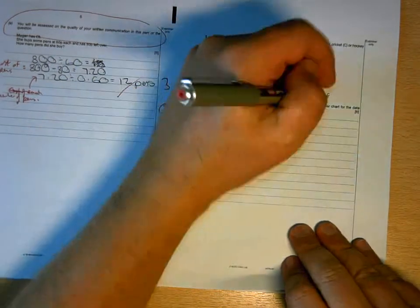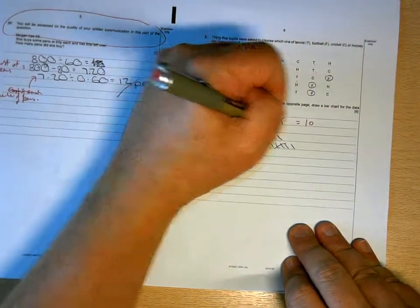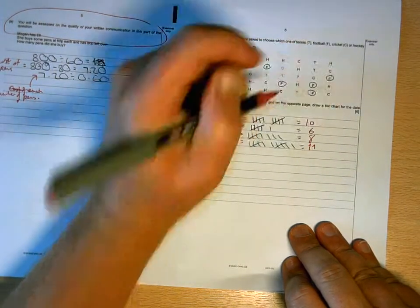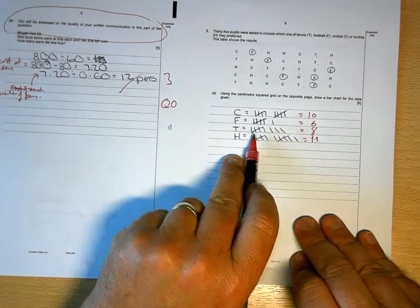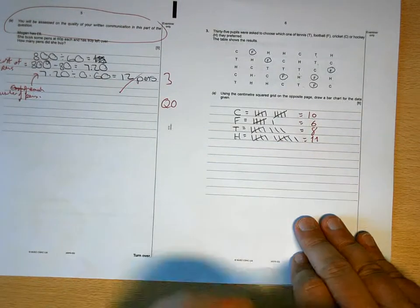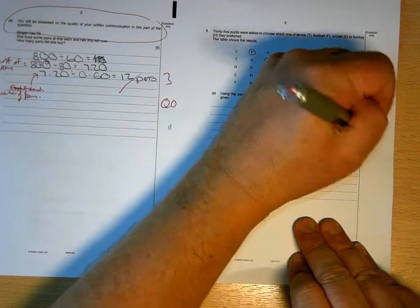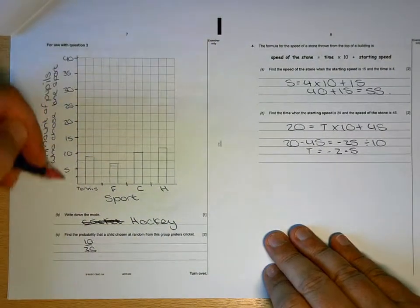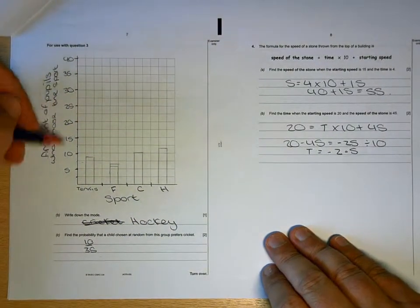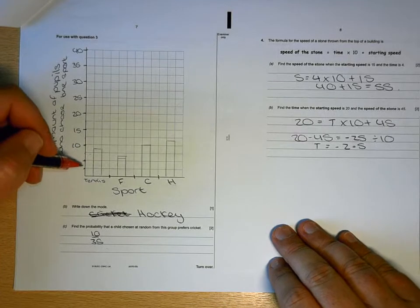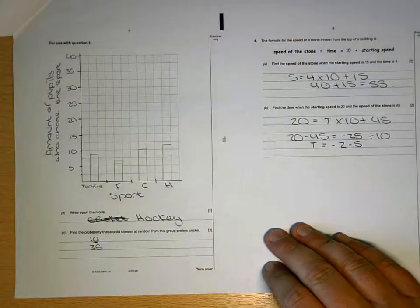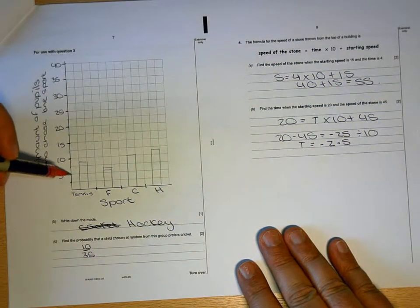Right, so that equals 10, that equals 6, that equals 8, that equals 11. It's worth you turning the little groups into numbers. Now your graph, you've chosen not a good scale there.